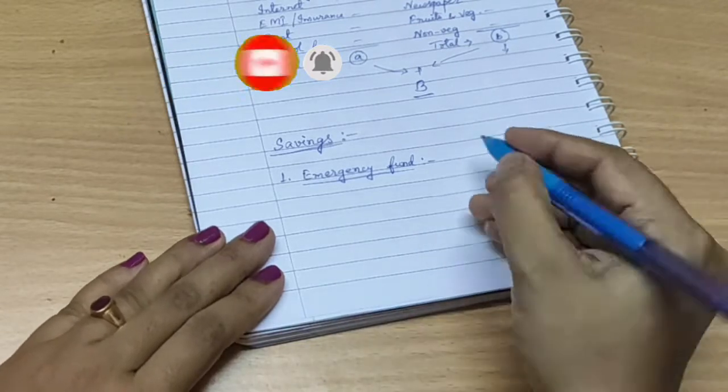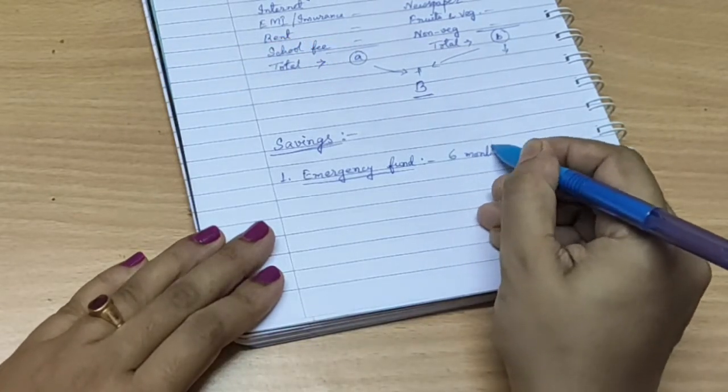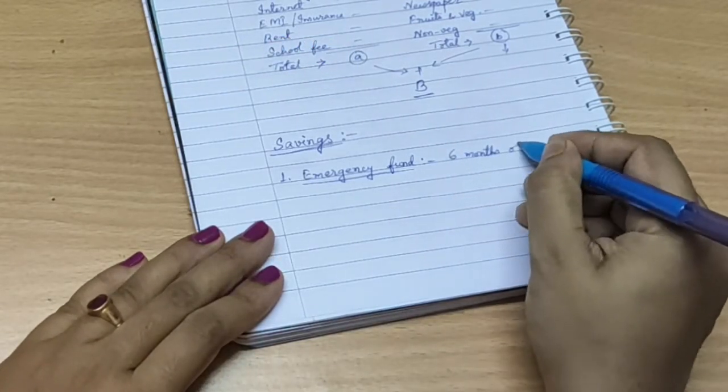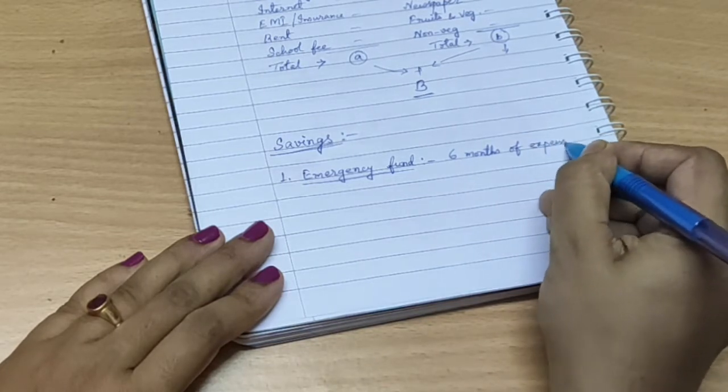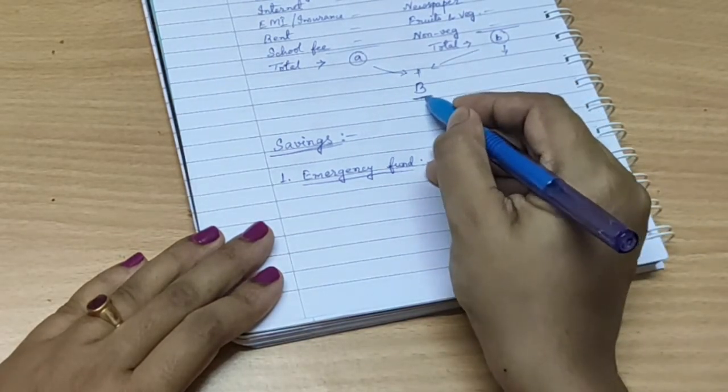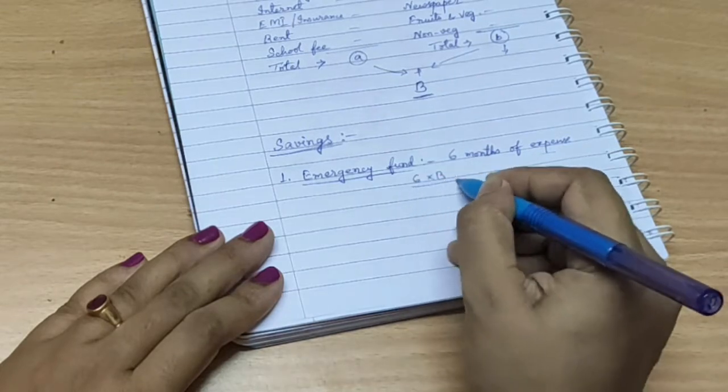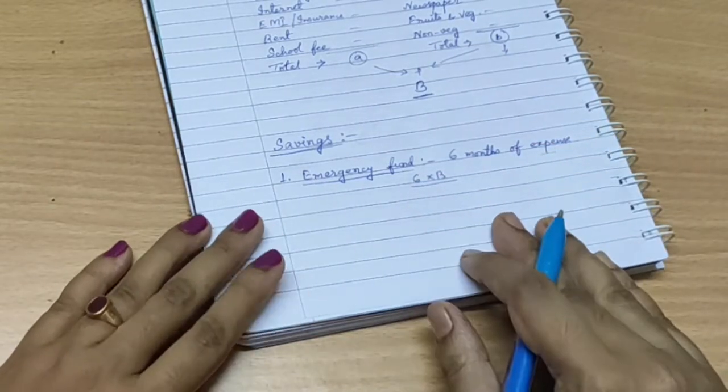So the first category of savings is the emergency fund. You should always have an emergency fund ready with six months of your monthly expense which we have already calculated. So fix an amount which you will contribute to this fund every month.